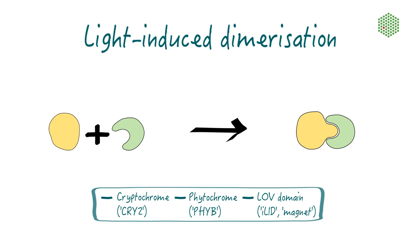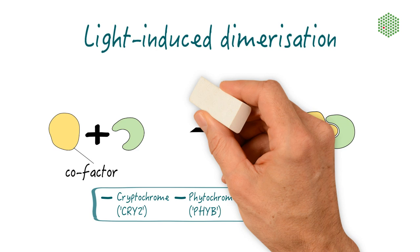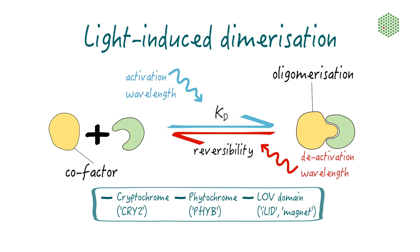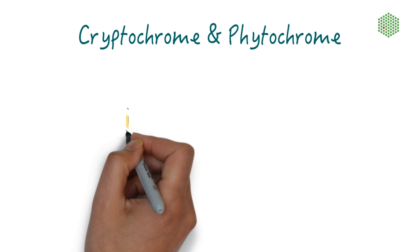These dimerization systems differ in molecular properties and reaction parameters, including the cofactor, the activation wavelength, the binding affinity, sensitivity and efficiency of the light activation, the oligomerization state, reversibility in dark state activity, and some systems can even be specifically inactivated using light of a different wavelength.